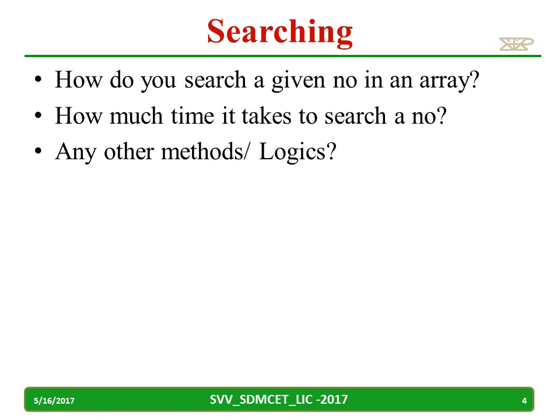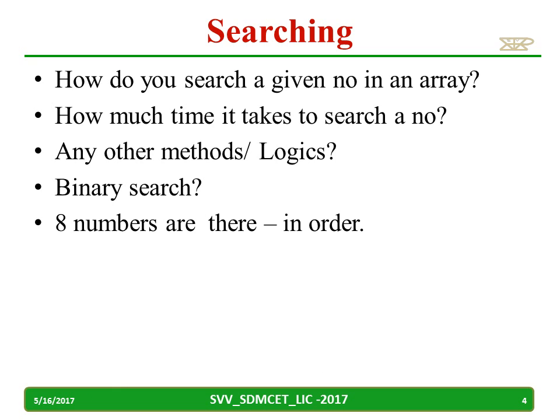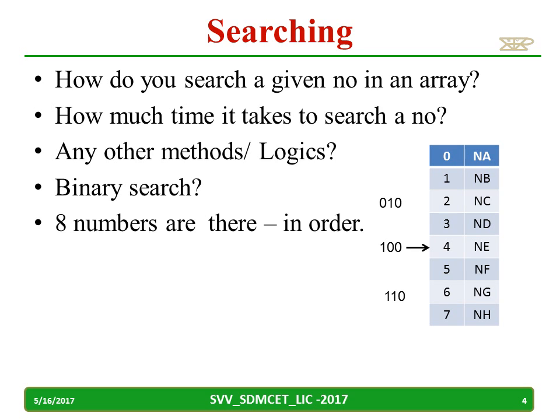Now, are there any other searching methods? Yes, another method is binary search. The condition is that the numbers must be stored in either ascending or descending order. Consider eight numbers — how do we search using binary search? Instead of searching from the first element, we go to the middle element, the fourth element. Based on the result true or false, we switch to the upper or lower portion. Every time we eliminate 50 percent. This is the basic binary search algorithm.